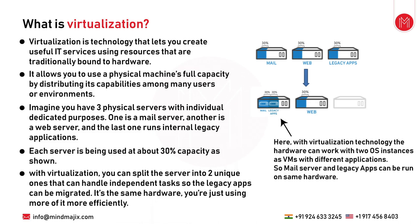The same resource problem applies to all physical servers, storage hardware, and everywhere. Virtualization wanted to dynamically allocate resources by abstracting them. Virtualization is the technology that lets you create useful IT services using resources traditionally bound to hardware. For server virtualization, CPU and RAM are the main resources bound to server hardware. By creating an abstraction layer — a piece of software — resources can be dynamically allocated to virtual instances running on top of it.